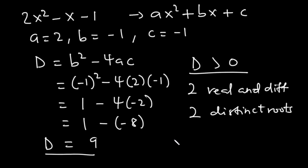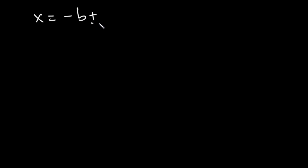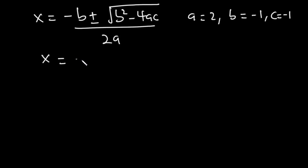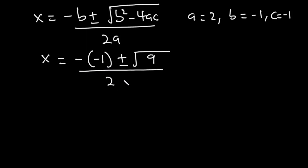Let's confirm using the general quadratic formula: x equals negative b plus or minus the square root of b squared minus 4ac, divided by 2a. From the equation, a was 2, b was negative 1, and c was negative 1. Plugging in the values: x equals negative of negative 1, plus or minus the square root of the discriminant, which was 9, divided by 2 times 2. So x equals 1 plus or minus the square root of 9, which is 3, divided by 4.